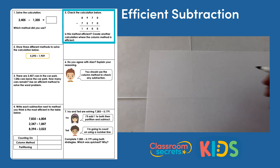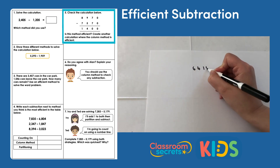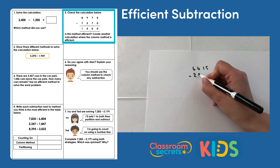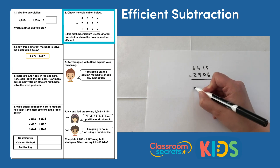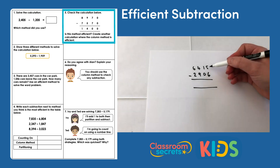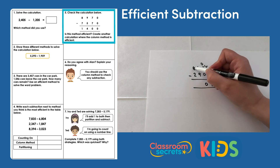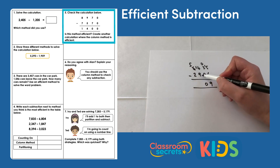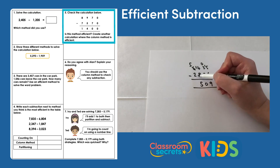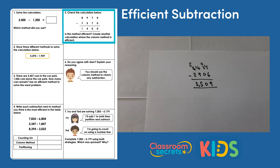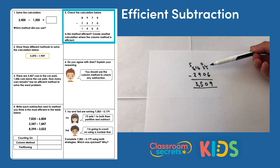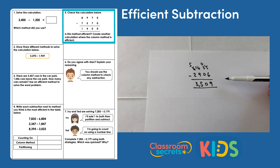For example: 6,415 subtract 2,906. Here we need to carry out an exchange: five take away six we can't do, so we exchange — fifteen take away six is nine; zero take away zero is zero; four hundred take away nine hundred we can't do, so we exchange again — fourteen hundreds take away nine hundreds is five; five thousand take away two thousand is three thousand. The answer is three thousand five hundred and nine. I chose these numbers because I knew I'd need to carry out exchanges, and I've proved it by completing the calculation.